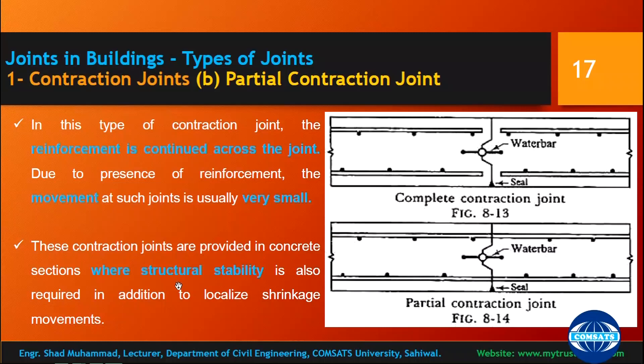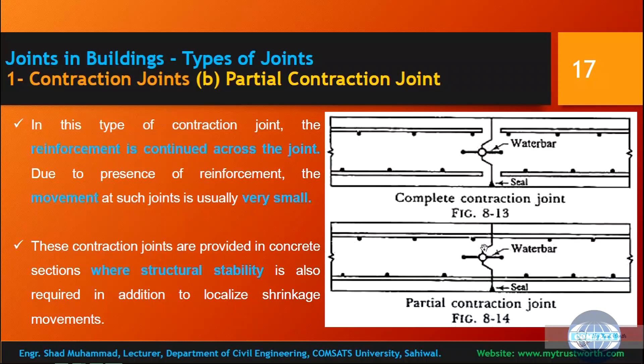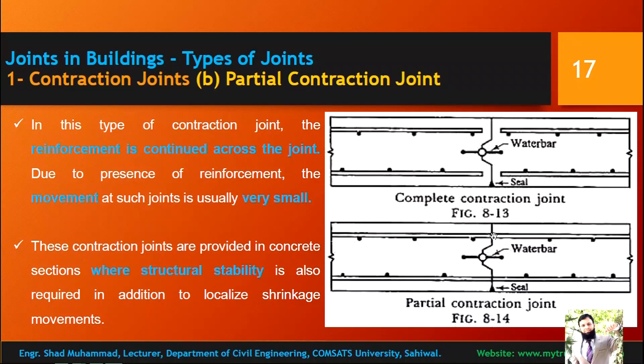In a partial contraction joint, the reinforcement is continued across the joint — unlike a complete contraction joint where reinforcement is discontinued. Due to the presence of reinforcement, movement at such joints is very small, as the contraction forces are resisted by reinforcement. These joints are provided where structural stability is required in addition to localized shrinkage. If you want both stability and localized shrinkage, use a partial contraction joint.